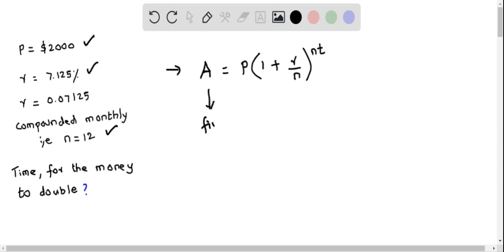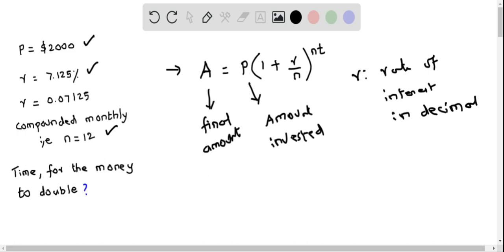A is the final amount after t years. P is the amount invested. r is the rate of interest in decimals. n is the number of times the amount is compounded. And t is the time.